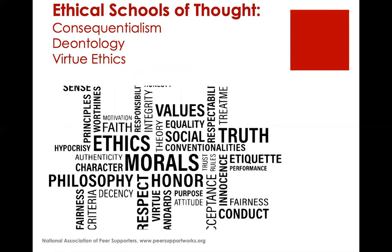There are three basic ethical schools of thought. The first is consequentialism, where the consequences of one's conduct are the ultimate basis for judging rightness or wrongness. A morally right act is one that produces a good outcome or consequence. The moral worth of an action is determined by its potential consequence, not by whether it follows written edicts or laws. An example: lying under the threat of government punishment to save an innocent person's life, even though it is illegal to lie under oath.